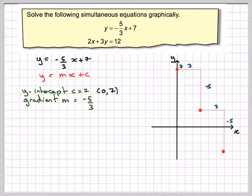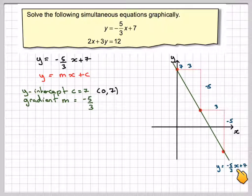Take your ruler and join these up with a nice straight line, and label at one end, y is equal to minus 5 over 3x plus 7.